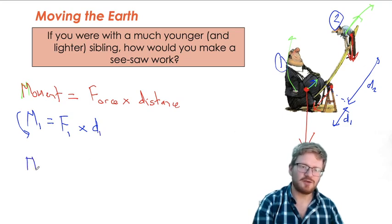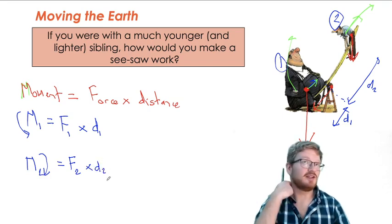I also have a moment acting in the other direction, and that one's trying to turn it clockwise. So that will be equal to force 2, the magnitude of force 2 in newtons, multiplied by the distance that it is from the pivot. So that would be D2.